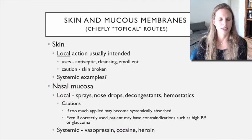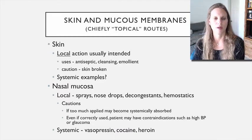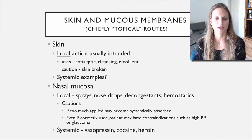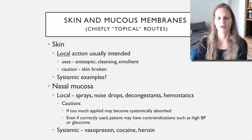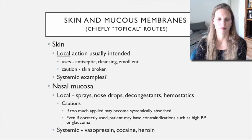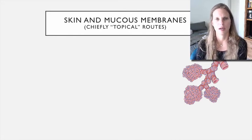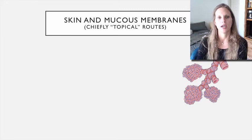There are also some systemic options for the nasal mucosa—vasopressin, which is also antidiuretic hormone. Cocaine and heroin are examples outside of therapeutic uses. Those come up in other conditions and circumstances but we don't need to think about them in terms of clinical pharmacology.